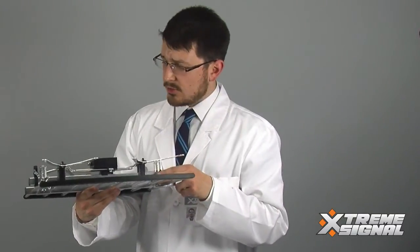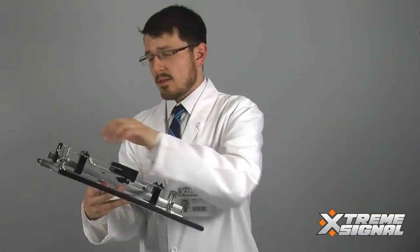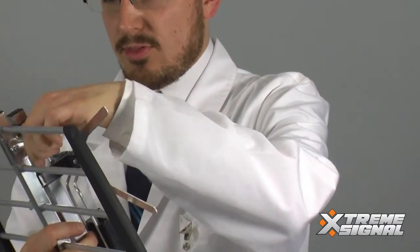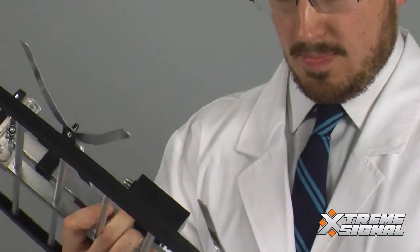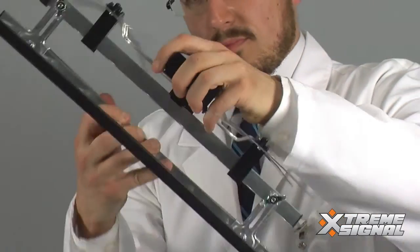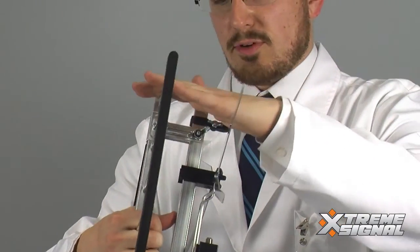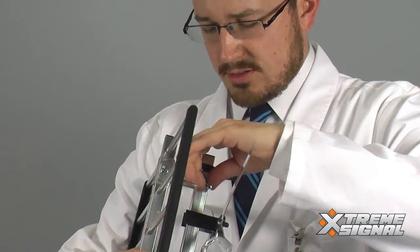Next, notice the 2 wingnuts here. We're going to be separating the antenna from the reflector, so loosen both the wingnuts. So we have some good separation between the reflector and the elements. Let's tighten those up.